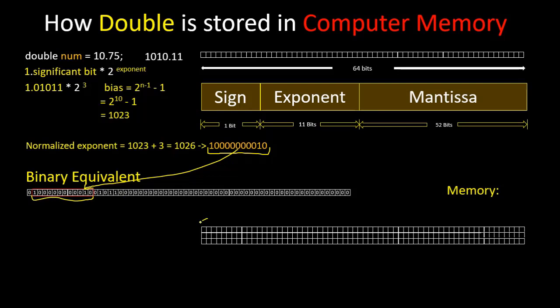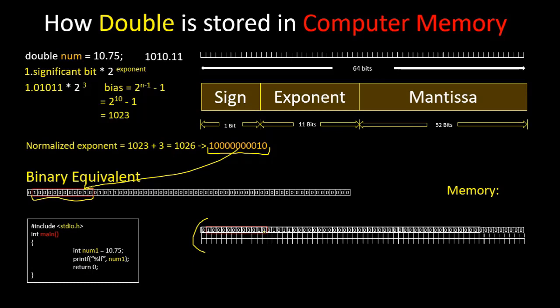If this is a computer memory, and if we have this program, then this number will be stored like this, and then this program will print 10.75. But how does it calculate 10.75 from this number? We have talked about that in the previous video. Now let's see how it calculates 10.75.